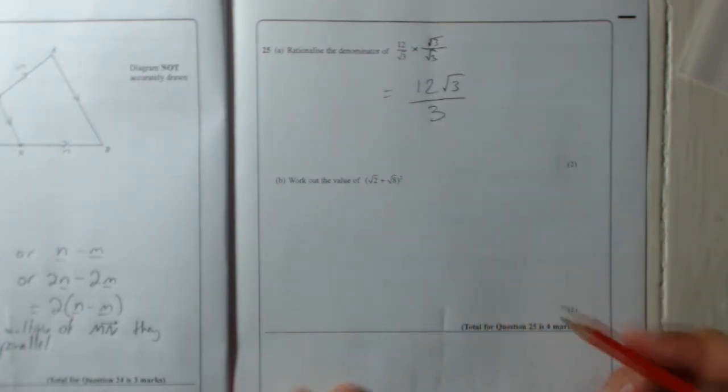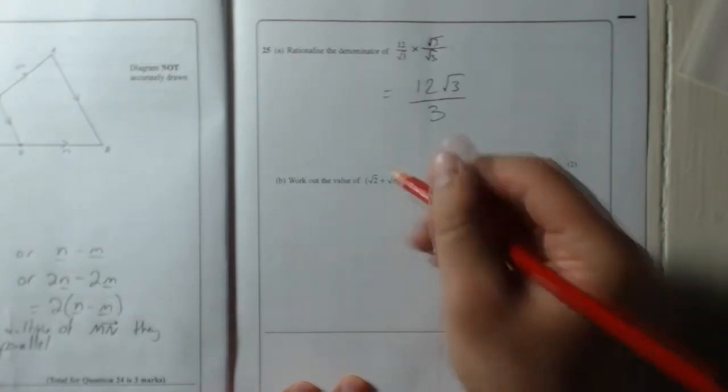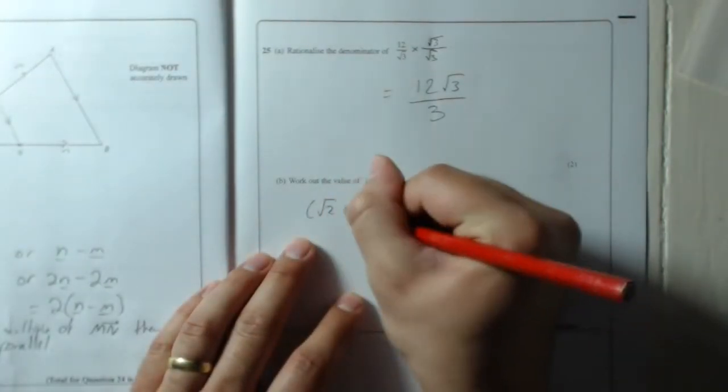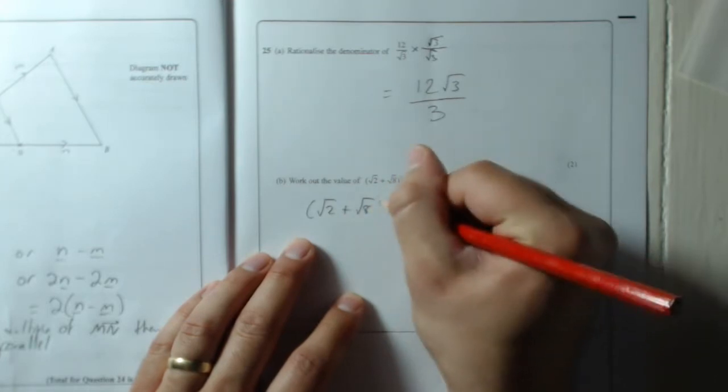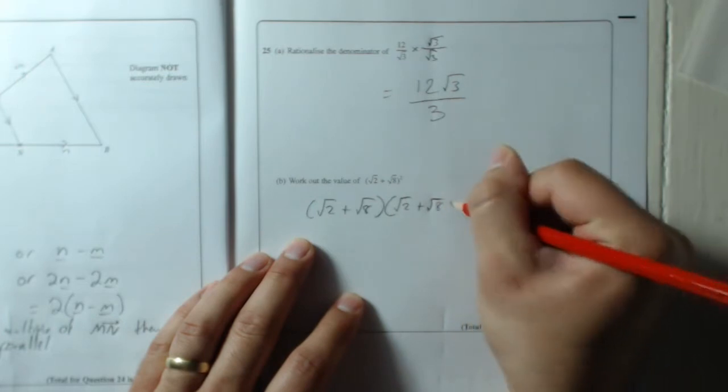Part B. Work out the value of this. Root 2 plus root 8 all squared. So what I'm going to do, I'm going to write it out like this: root 2 plus root 8 times by, because it's all squared, the same thing: root 2 plus root 8.